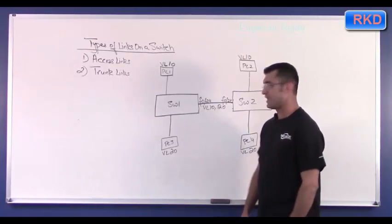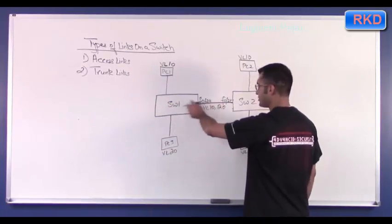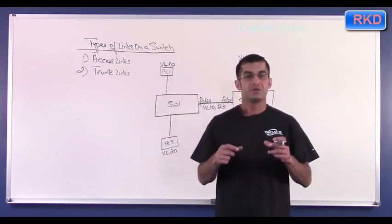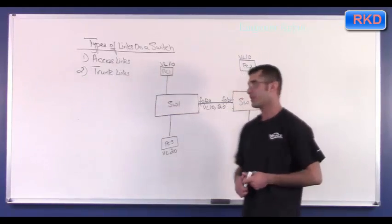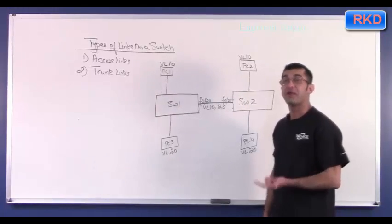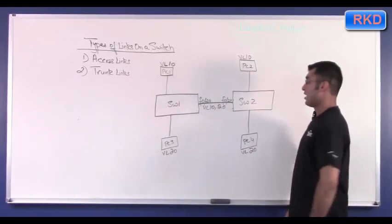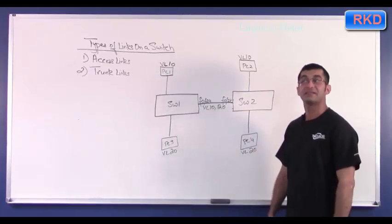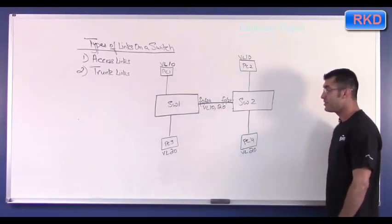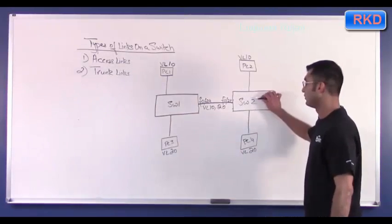Each frame coming from PC One or PC Three, when Switch One sends it out towards Switch Two, will have an identifier inside it identifying the VLAN the frame belongs to. When Switch Two receives a frame from PC One, the frame has an ID saying it belongs to VLAN 10, so Switch Two knows to forward it out to PC Two. A frame from PC Three will have a tag saying VLAN 20, so Switch Two knows that frame goes to PC Four.